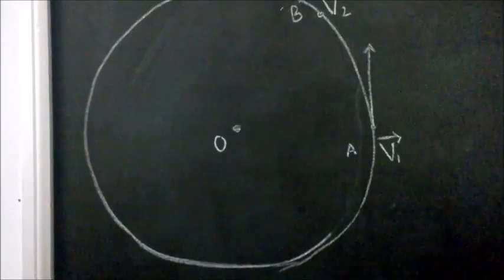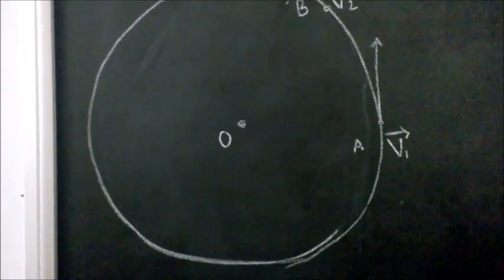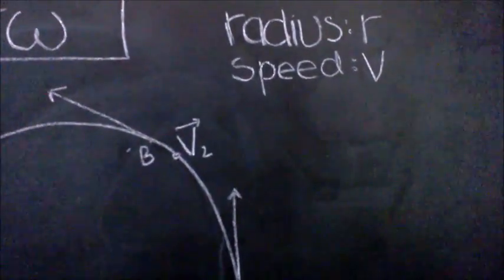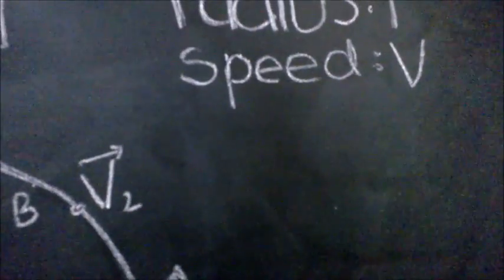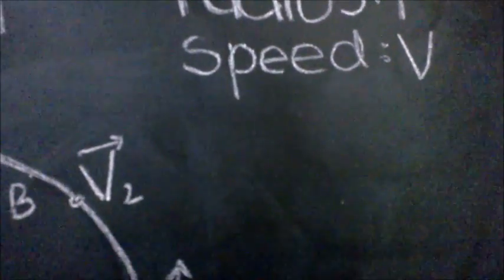Now, let's take a case where I have a ball tied to a rope and I keep swinging it in a circular path of radius r with uniform speed v. Notice that I have not put an arrow over the v. That is because it is a scalar quantity, not a vector one.